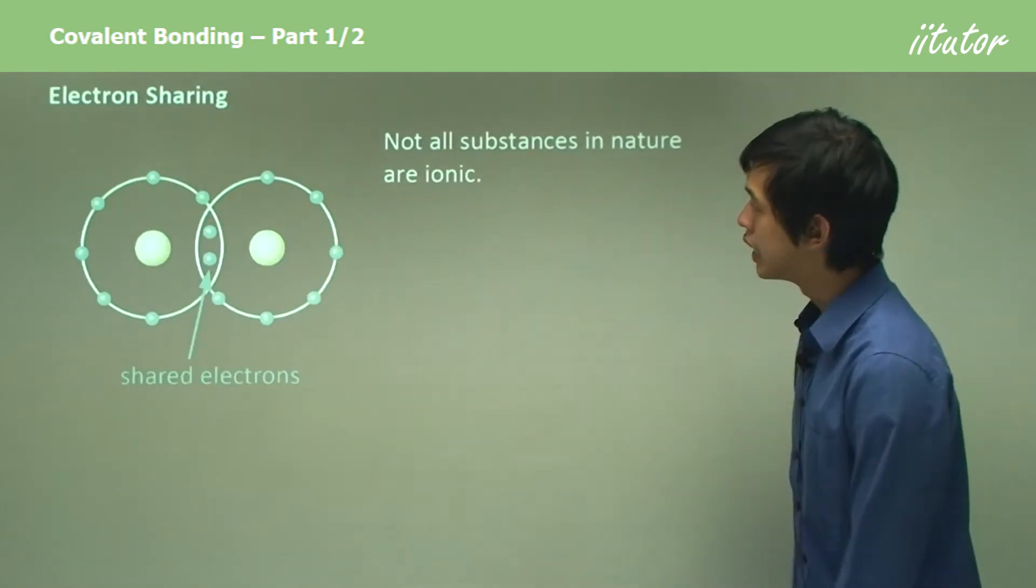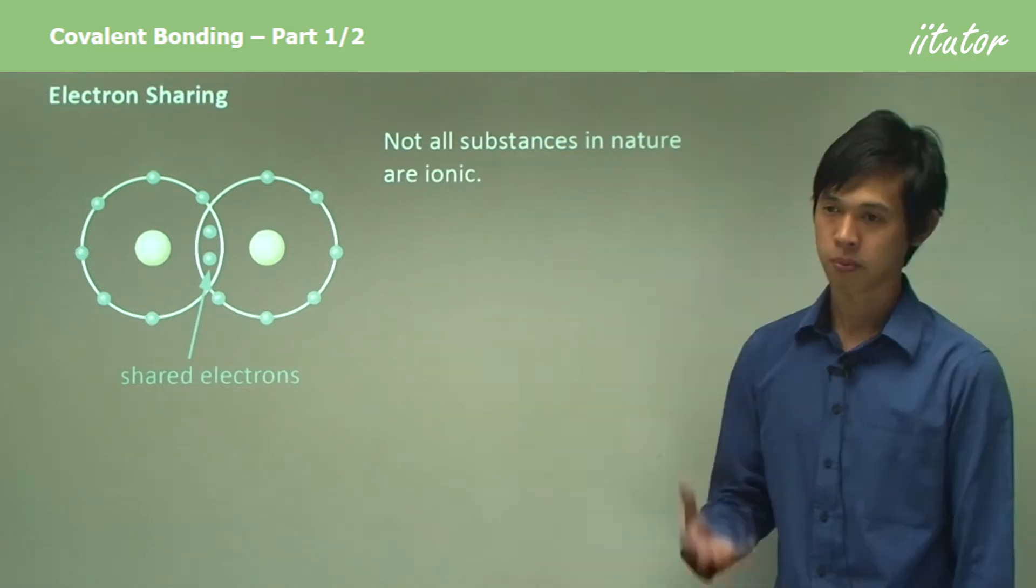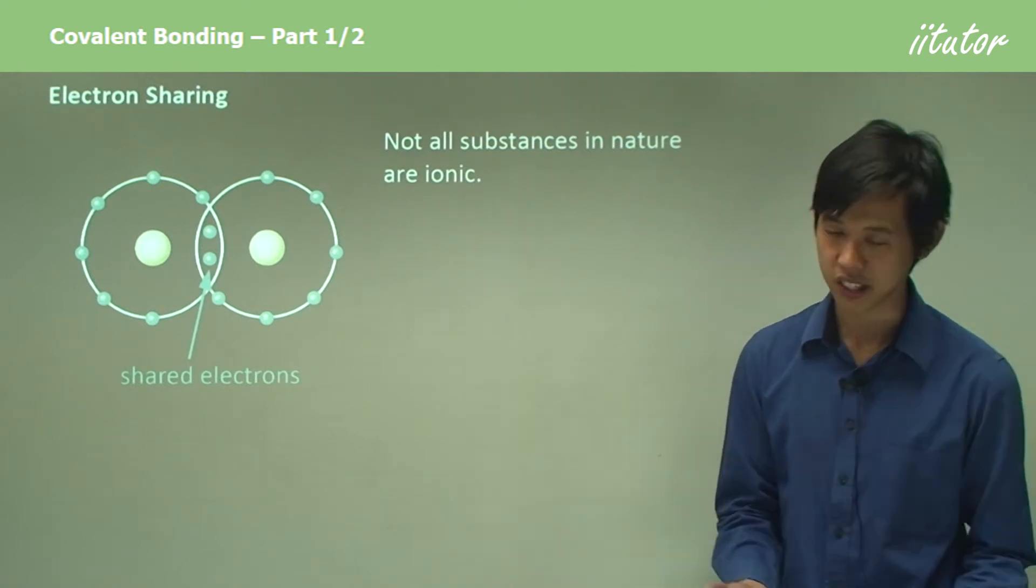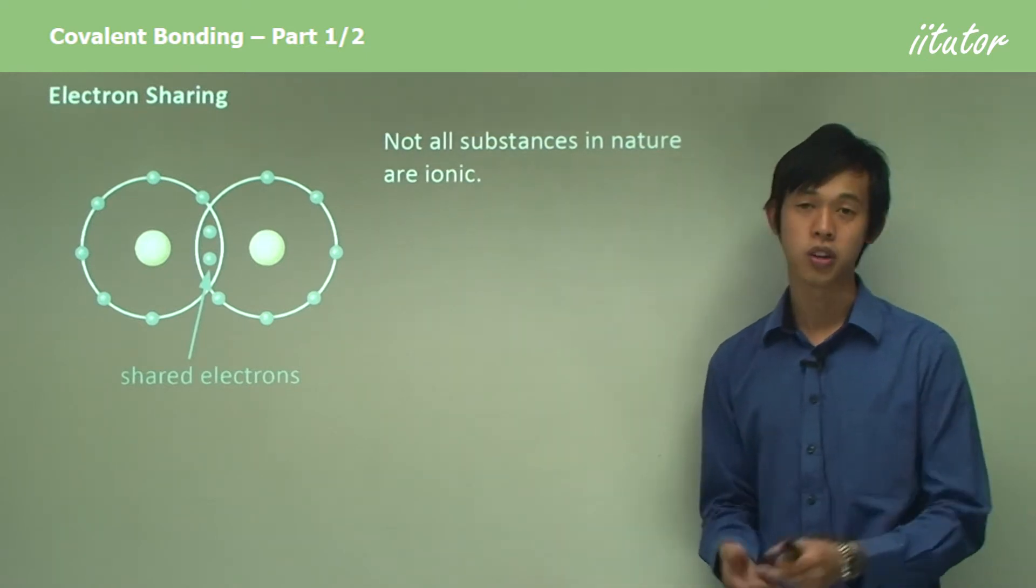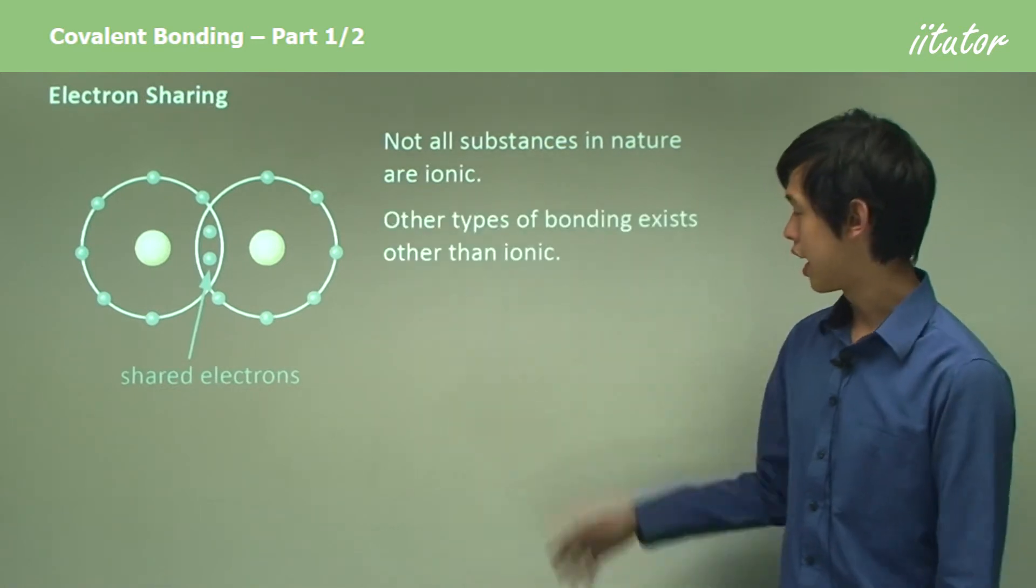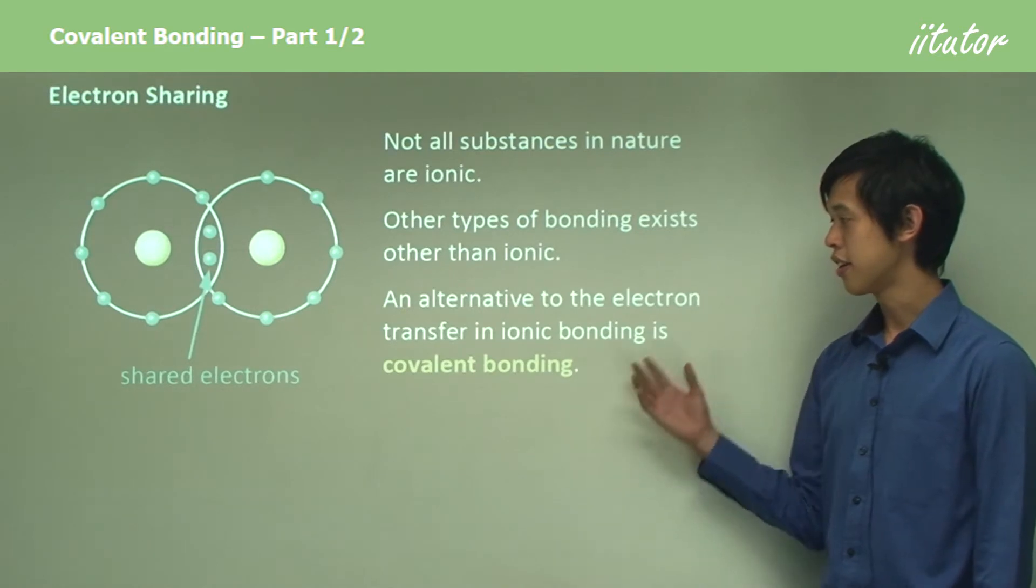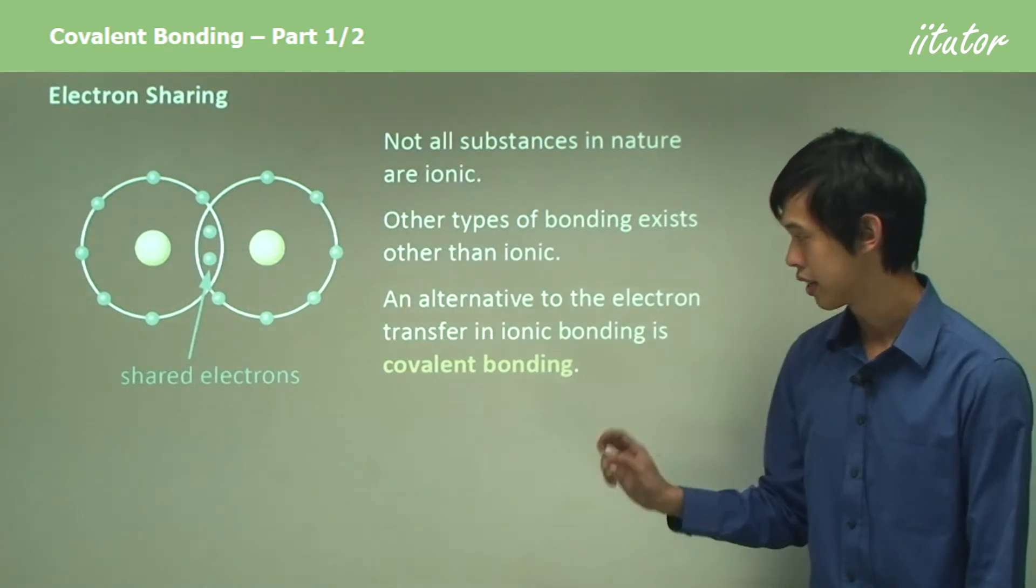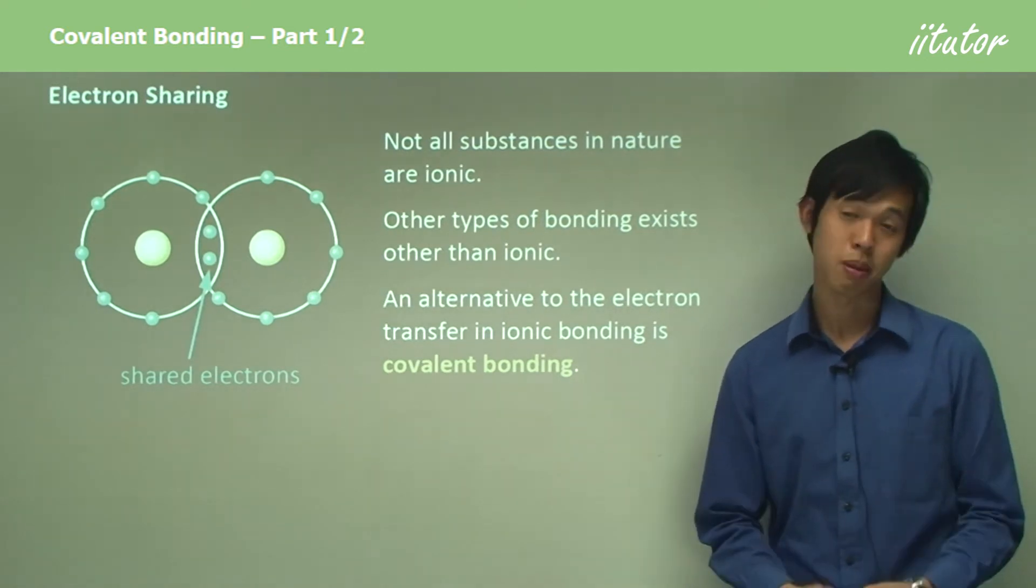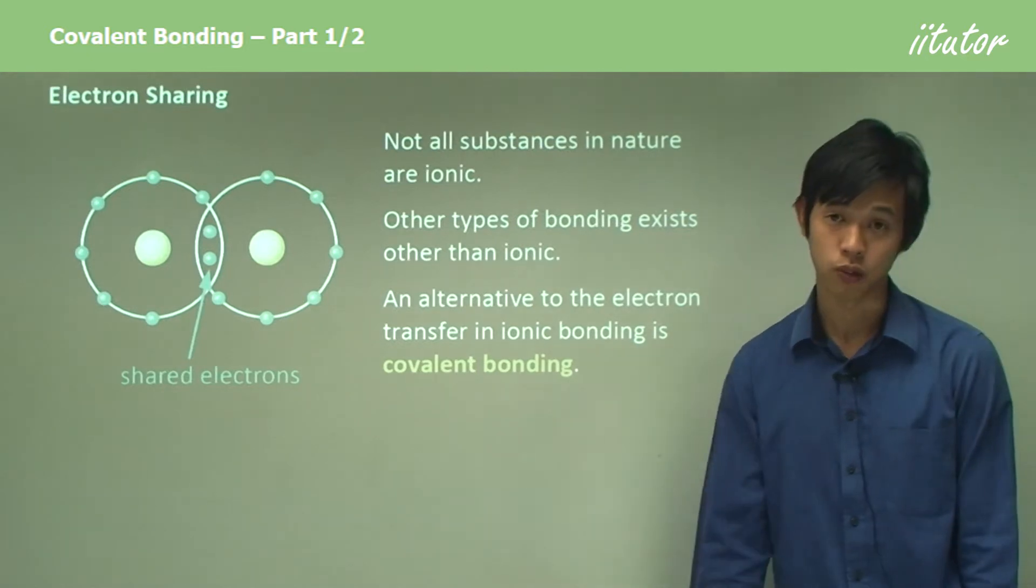Electron sharing. Not all substances in nature are ionic. Obviously you can see that just from studying anything. Salt is not the same as gas, so you can see that ionic bonding won't encompass every substance you see in nature. Other types of bonding exist other than ionic. An alternative to the electron transfer in ionic bonding is covalent bonding. If some atoms don't really want to give away their electrons, they just want to maybe loan them to someone, then covalent bonding may be an option for them.